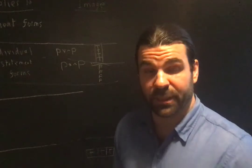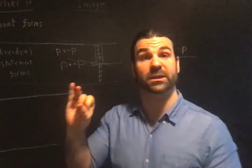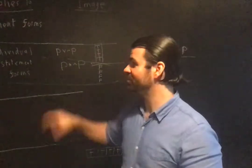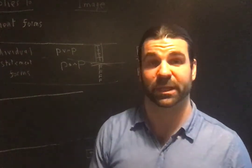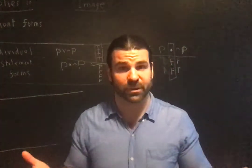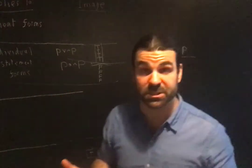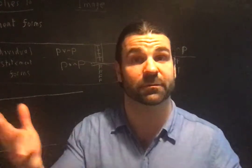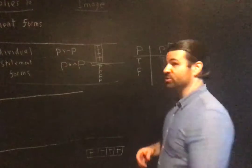A contingency is just an individual statement form where the column under the major operator has at least one T and at least one F — so there's a mixture of T's and F's. It's the one that's left over from tautology and contradiction. If it's a statement form in our sentential logic language and it's truth-functional, every instance has a truth value. So if it's not all true and not all false, there have to be some true and some false. A contingency is a statement which is true in some circumstances and false in others — true in some worlds and false in other worlds.